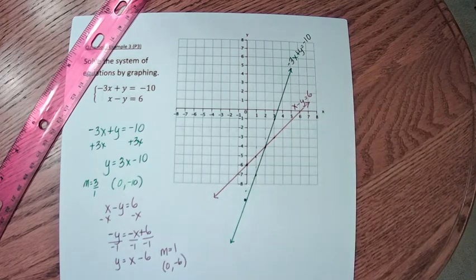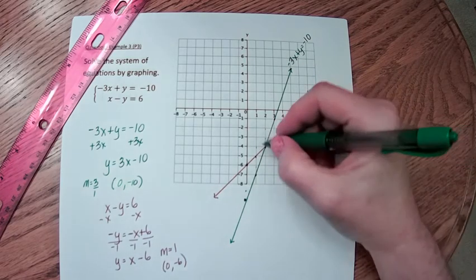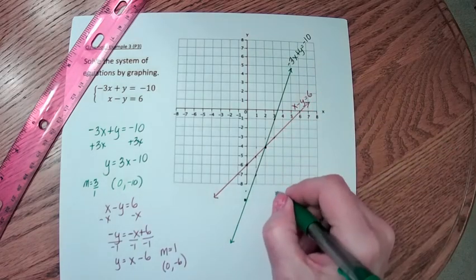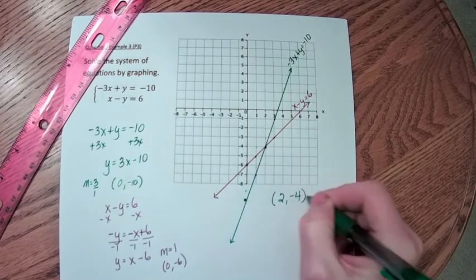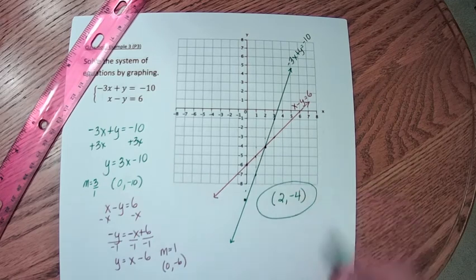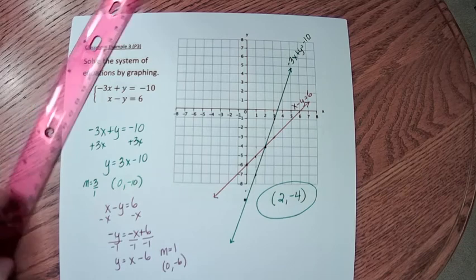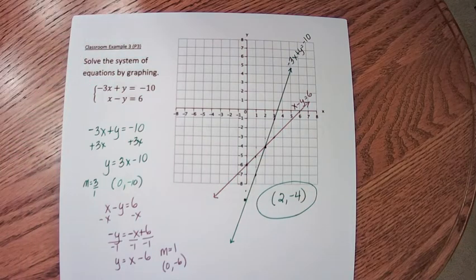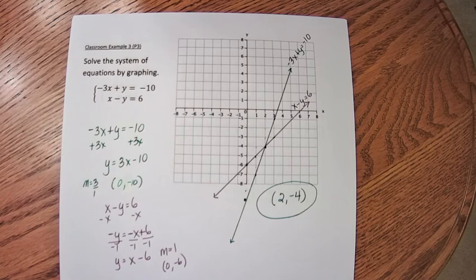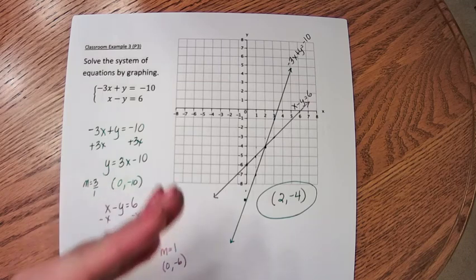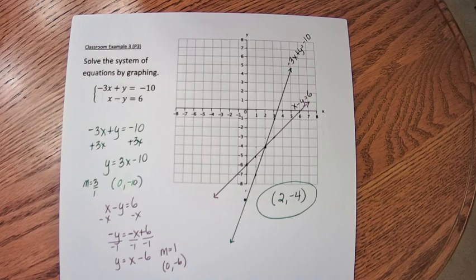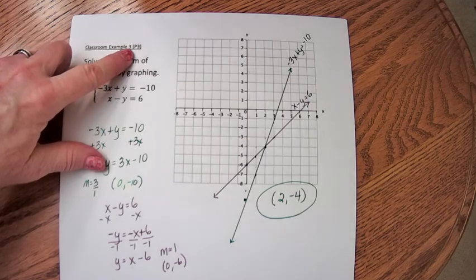So where are these two lines intersecting? They're intersecting at the point (2, negative 4). That's the solution to the system — the single point where x is 2 and y is negative 4 makes both equations true, and we found that by graphing. You have to be very careful when you graph — I think it's the least reliable way of finding a solution, because if you're not careful with your straightedge, you might not find the exact right point.